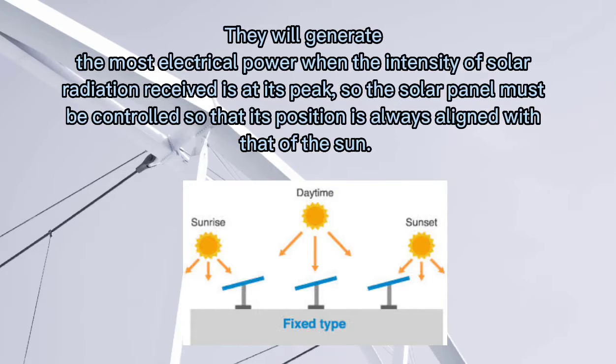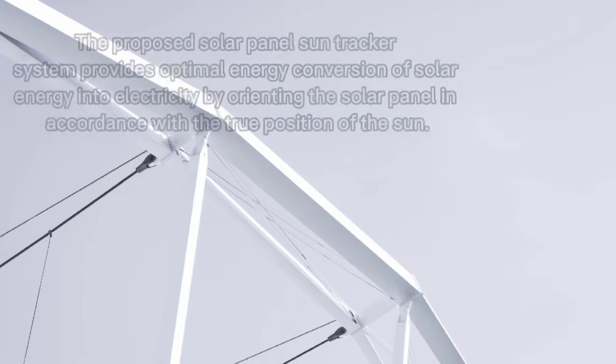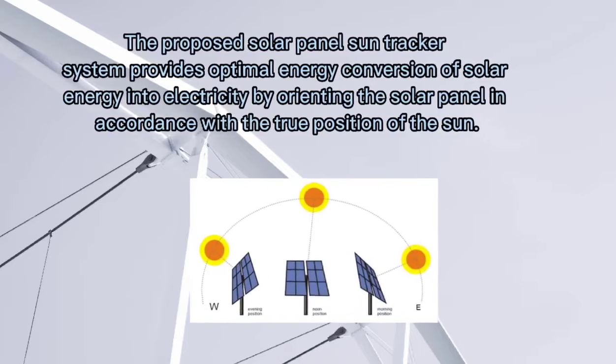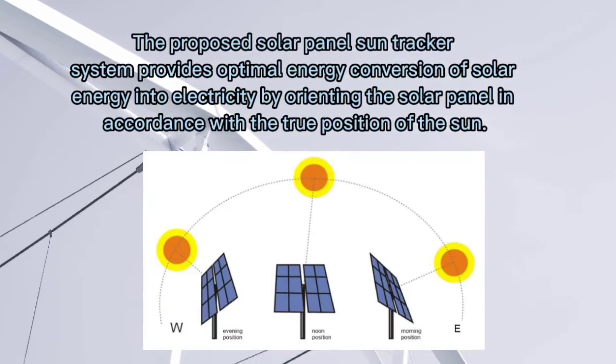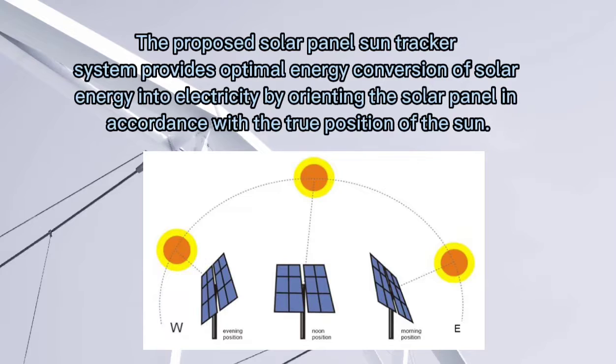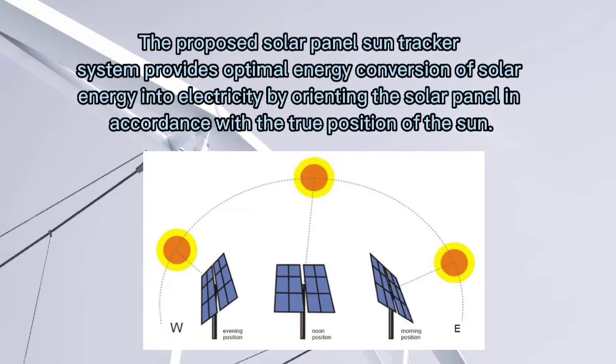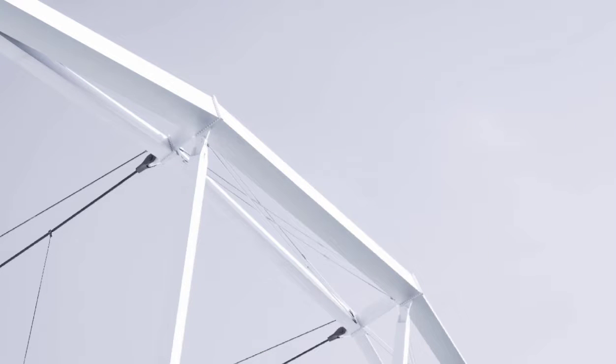The proposed solar panel sun tracker system provides optimal energy conversion of solar energy into electricity by orienting the solar panel in accordance with the true position of the sun.